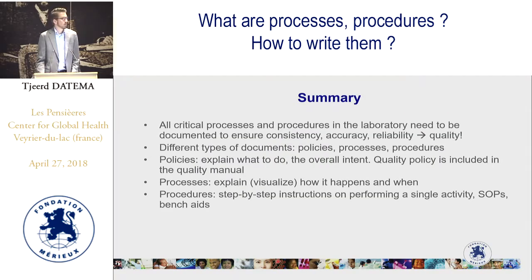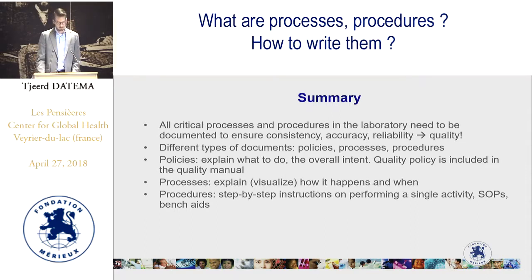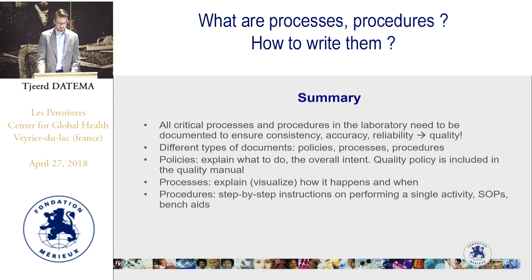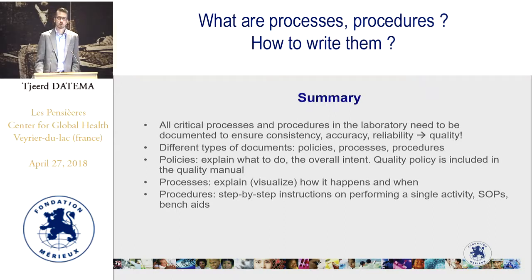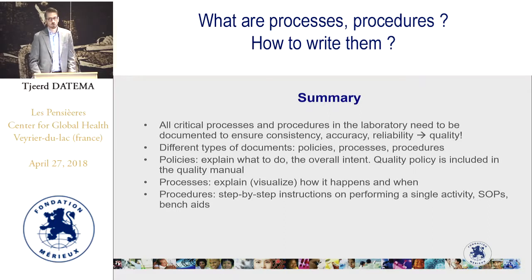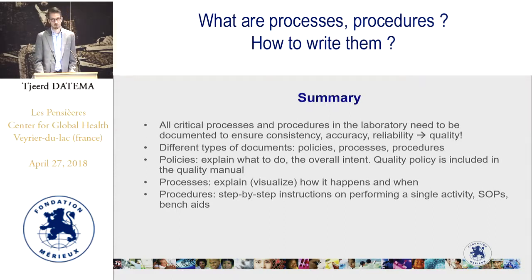In this webcast I will be talking about how all critical processes and procedures in the laboratory need to be documented to ensure consistency, accuracy and reliability — or in other words, quality. I'll be talking about the different types of documents: policies, processes and procedures. Policies explain what to do — the overall intent — and in our laboratory you need a quality policy when we implement the quality management system, and this quality policy needs to be included in the quality manual. There are also processes that explain or visualize how something happens, and then we have procedures which are the step-by-step instructions on performing a single activity. Procedures in the laboratory are documented in SOPs — standard operating procedures — and bench aids.